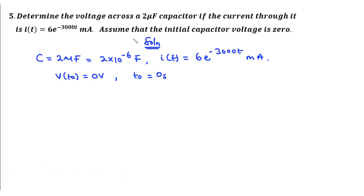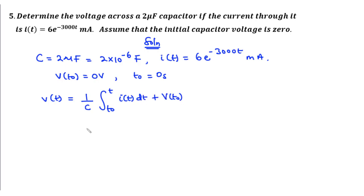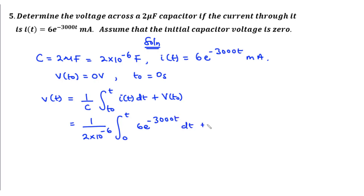So let's try to find the voltage across the capacitor. The instantaneous voltage across the capacitor is simply one over C times the integral from t naught to t of I of t dt, plus v of t naught. So this is equal to one over C, which is two times ten to the power negative six, times the integral from zero to t of I of t — that is six times e to the power negative 3000 t dt — plus zero, since v of t naught is zero volts.